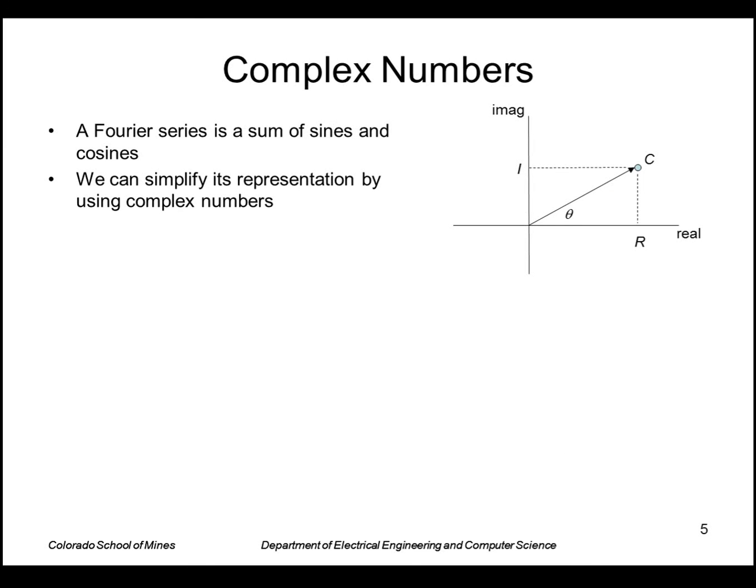So we're going to use complex numbers to simplify the representation of a Fourier series. Recall that a complex number is a combination of a real and imaginary component, where j equals square root of minus one is the imaginary component. So we can think of it as a point on a two-dimensional plane. We've got the real axis, imaginary axis, and this is our complex number represented by this point here.